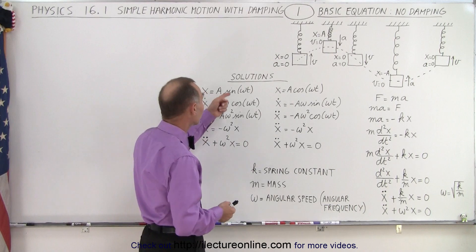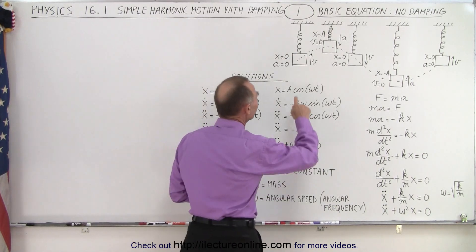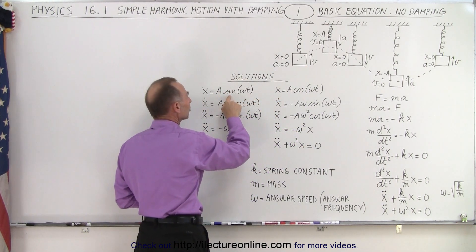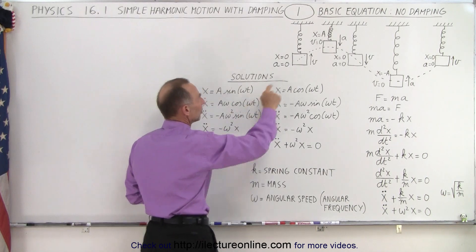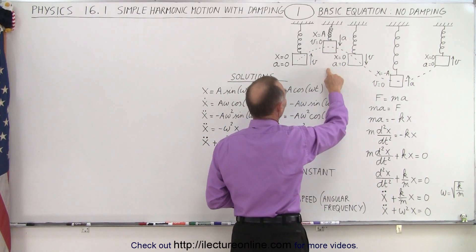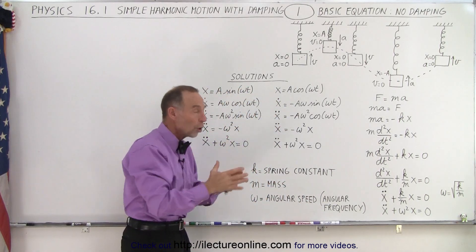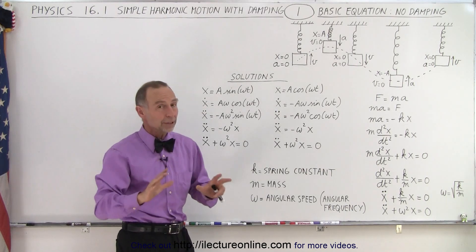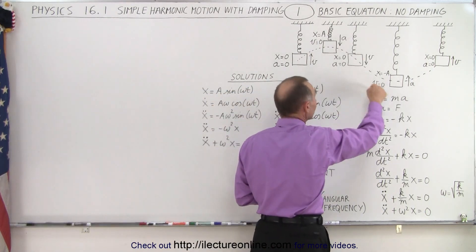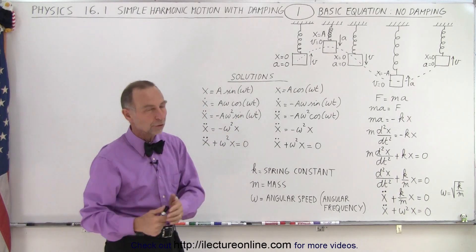The solution can be either a sine or cosine function, depending on the initial conditions. If time equals zero at the equilibrium point, amplitude is zero — that's a sine function, since sine of zero is zero. If time equals zero when the object is at its maximum displacement, we use a cosine function, since cosine of zero is one and x equals A. Whether we use sine or cosine simply depends on where the object is when time equals zero. If it's at another position, we may need a negative sign or a phase angle, which we'll address in a later video.